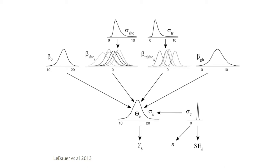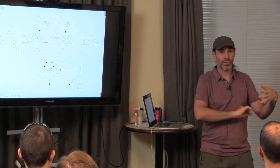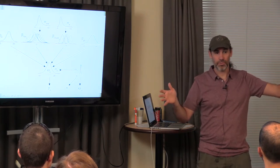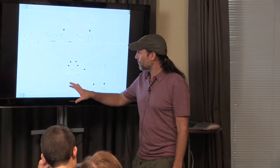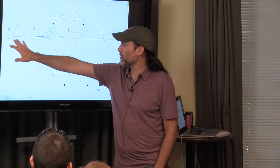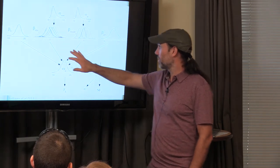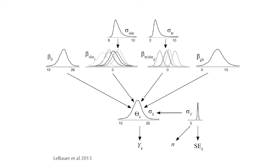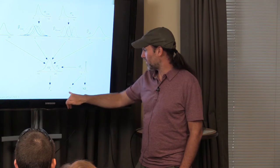Anytime we run ecosystem models, it connects to the trait databases, pulls the latest trait data, and updates parameters. We start with uninformative or expert-elicited priors on model parameters, then update those with trait data. The graphical model shows fitting a cross-site mean, a random site effect, a random treatment effect — because we often synthesize data from experimental studies with different treatments — and a fixed effect for greenhouse or potted plant studies, knowing those traits may be systematically biased relative to natural systems.